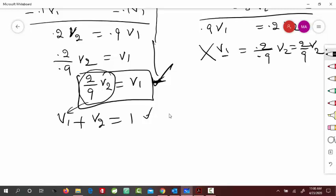So because it's equal to V1, I would replace it here. So I would get 2/9 of V2 plus V2 equal to 1, which would sum up to 11/9 V2 equal to 1.